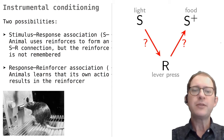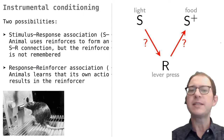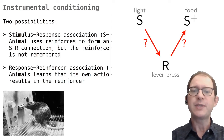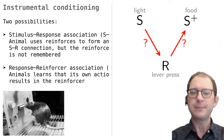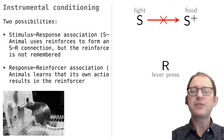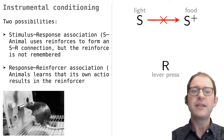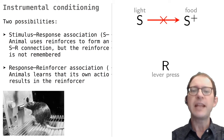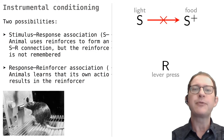So in instrumental conditioning, the question of whether animals understand what's coming is phrased as an alternative between a stimulus-to-response association, which would mean no understanding, and a response-reward association, which would mean at least some understanding. Note that in instrumental conditioning it does not make sense to consider a stimulus-to-stimulus association between the light and the food, because instrumental conditioning is about learning an action, and so whatever is learned must include information about the action that is performed.